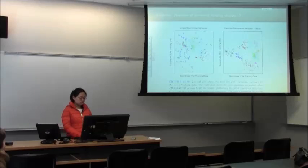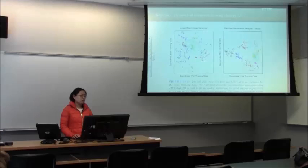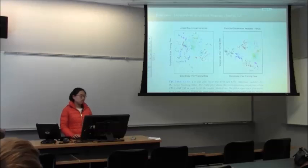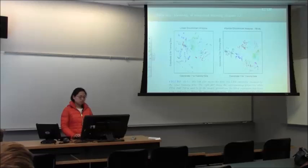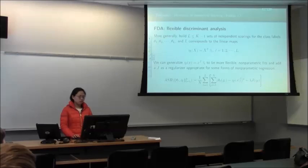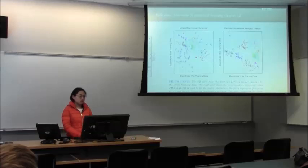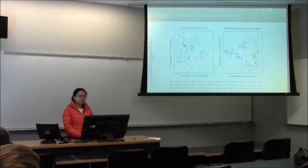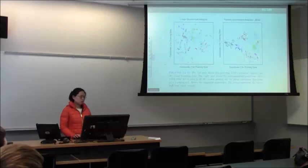In linear discriminant analysis with no penalty, using eta-1-hat and eta-2-hat to plot the points — with different colors for different classes — they are not completely separated. On the right-hand side, flexible discriminant analysis with a penalty is used. After estimating eta-1-hat and eta-2-hat with the penalty, plotting those points using these coordinates shows them well-separated. That is the advantage of flexible discriminant analysis when ordinary discriminant analysis doesn't work well.